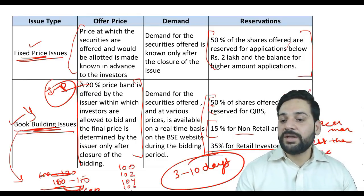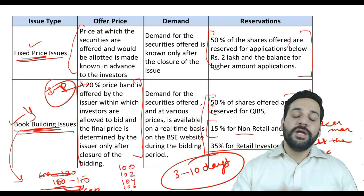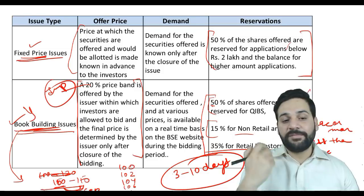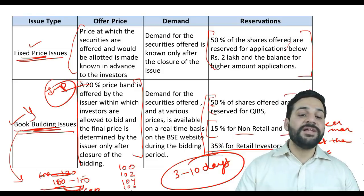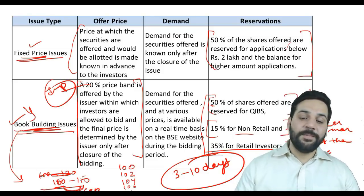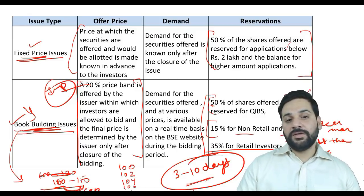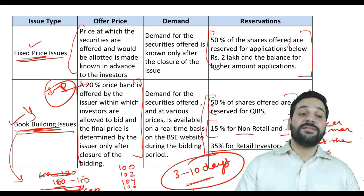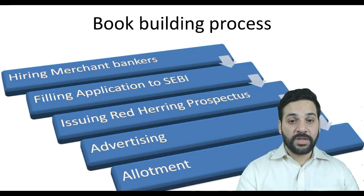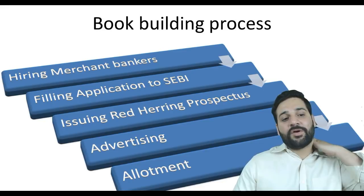To summarize the key points from this slide: the share reservations are important, the definition of retail investors, the definition of non-retail investors, the 20% price band gap, what is the floor price and cap, and that the offer can be open for three to ten days — all of these are really important.